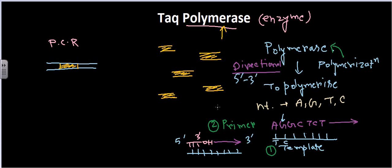Another feature is called proofreading activity. The template strand carries different nucleotide sequences, and during nucleotide addition the polymerase reads the template — for example if the template has C it brings G, if it has G it puts C. The job of polymerase is to read the template DNA and bring the complementary nucleotide.